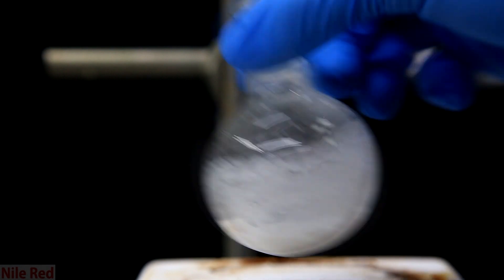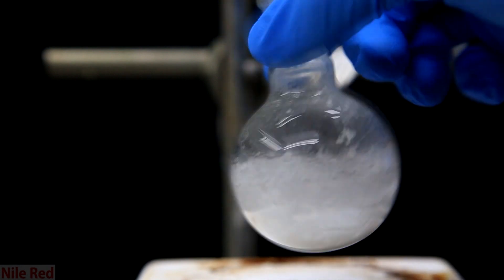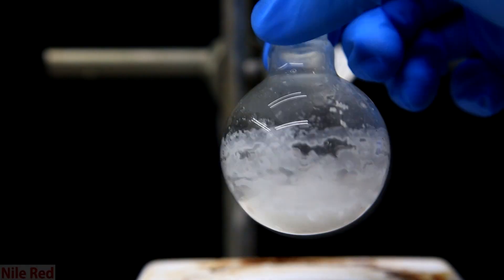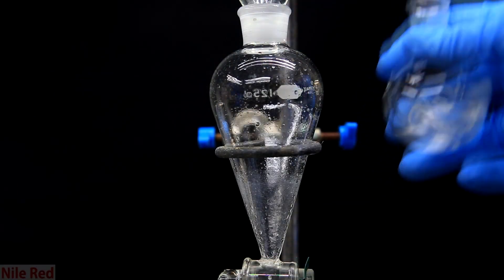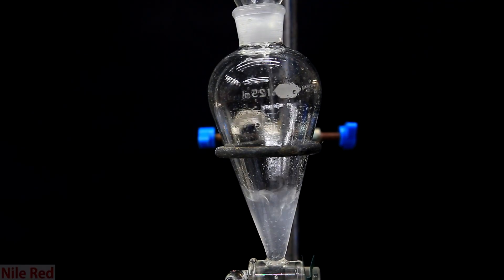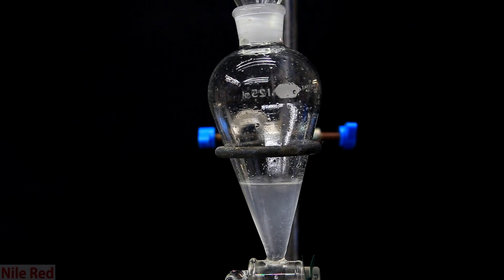Just as a side note this is a reaction that's commonly used to make meth. What's interesting though is that when the precursor to make meth is used instead of benzene the reaction mechanism that it follows is completely different. Unlike pretty much all Birch reductions the ring isn't reduced and another part of the molecule is.